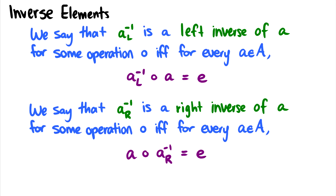Now, inverse elements. We say that A_inverse_L is a left inverse of A if, for some operation and every A, the left inverse of A combined with A gives you back the identity. For example with addition, the identity is zero. If I have the number six, what number takes six back to zero? The answer is negative six — so negative six is a left inverse of six.